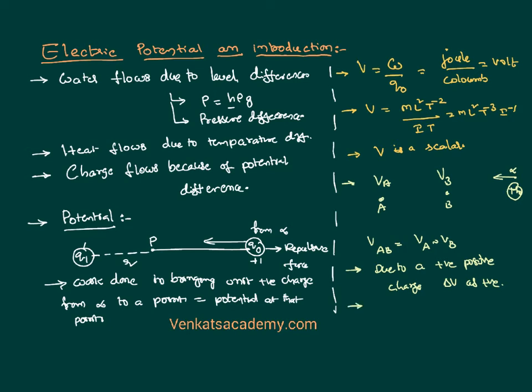Potential is the parameter based on which we can also calculate work done. If you know the potential, work done can be written simply as V·Q in any given scenario or problem. Potential is defined as the amount of work done in bringing a unit positive charge from infinite distance up to a particular point, and because of the potential difference, there is a flow of current from one place to another. We will continue this discussion further in the coming video lesson. Thank you for watching.